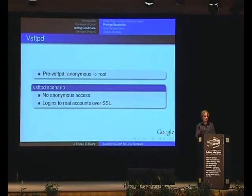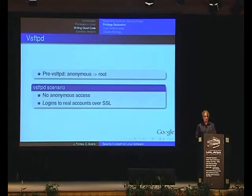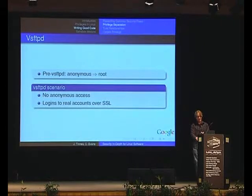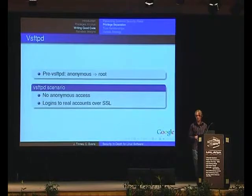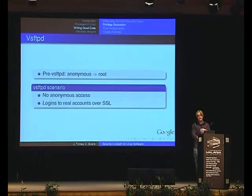The concrete scenario we're going to talk about is an FTP server that doesn't expose anonymous accounts — just password-authenticated accounts — and those logins have to be over SSL. The reason we've thrown SSL into the equation is that it's kind of hard to get the FTP protocol wrong before you've logged in. But if you add SSL, you've got the whole SSL handshake with integers and lengths flying back and forth across the network, which is a much larger and more risky attack surface. The goal is to see what we can do based on our assumption that there will be vulnerabilities in SSL libraries that still haven't been discovered.